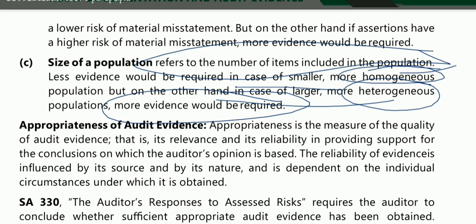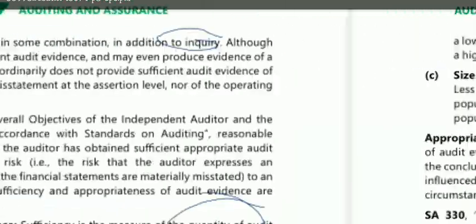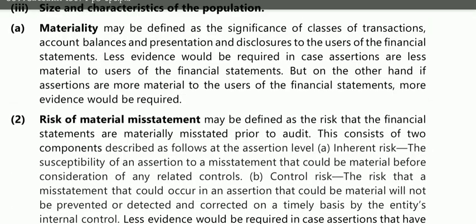If the overall risk is low, less evidence will also be required. In terms of population size: if the population is large but homogeneous — same nature items — less evidence may still be sufficient. But if the population is more heterogeneous, more evidence will be required. So population size and characteristics together affect the quantity of evidence needed.